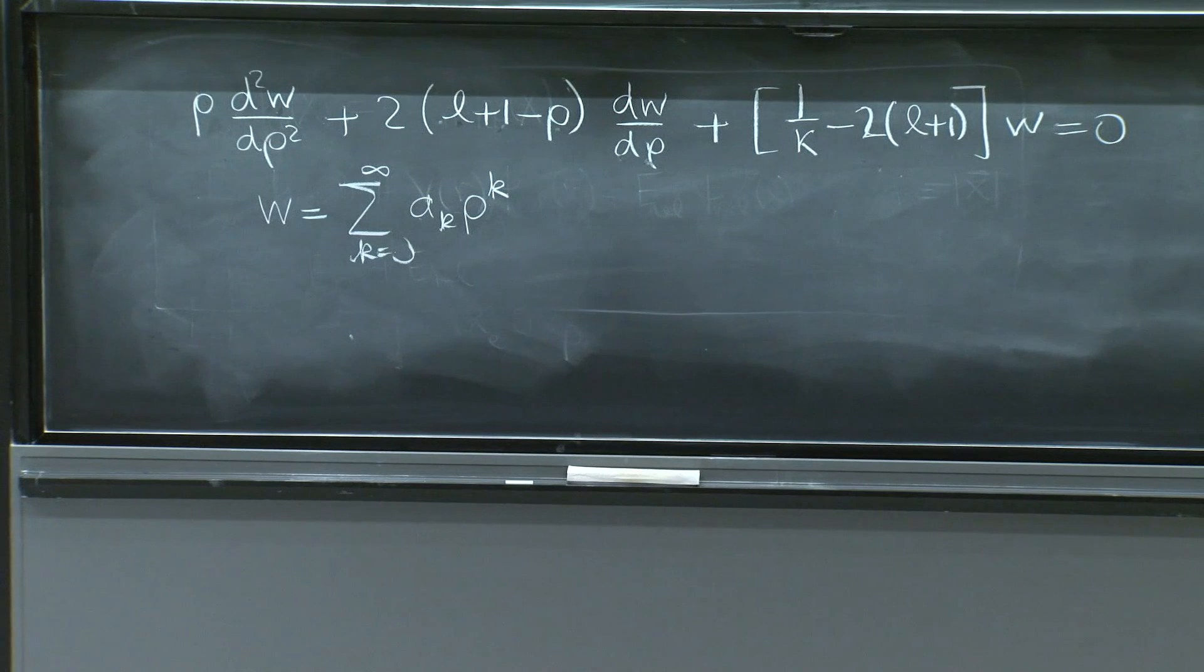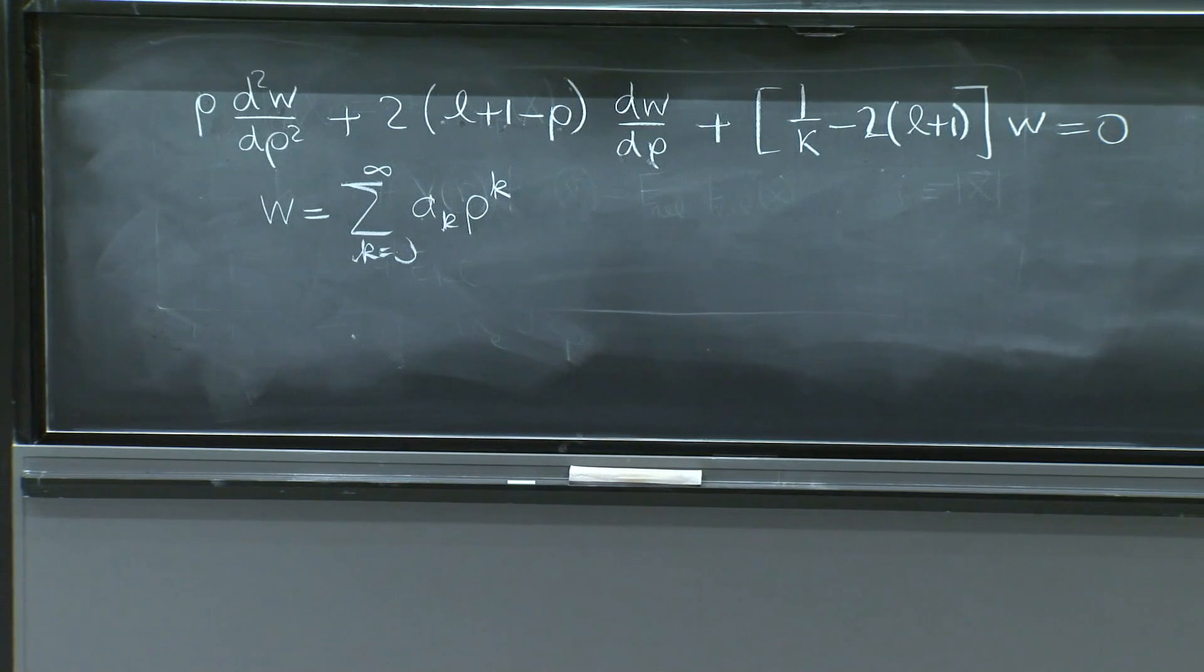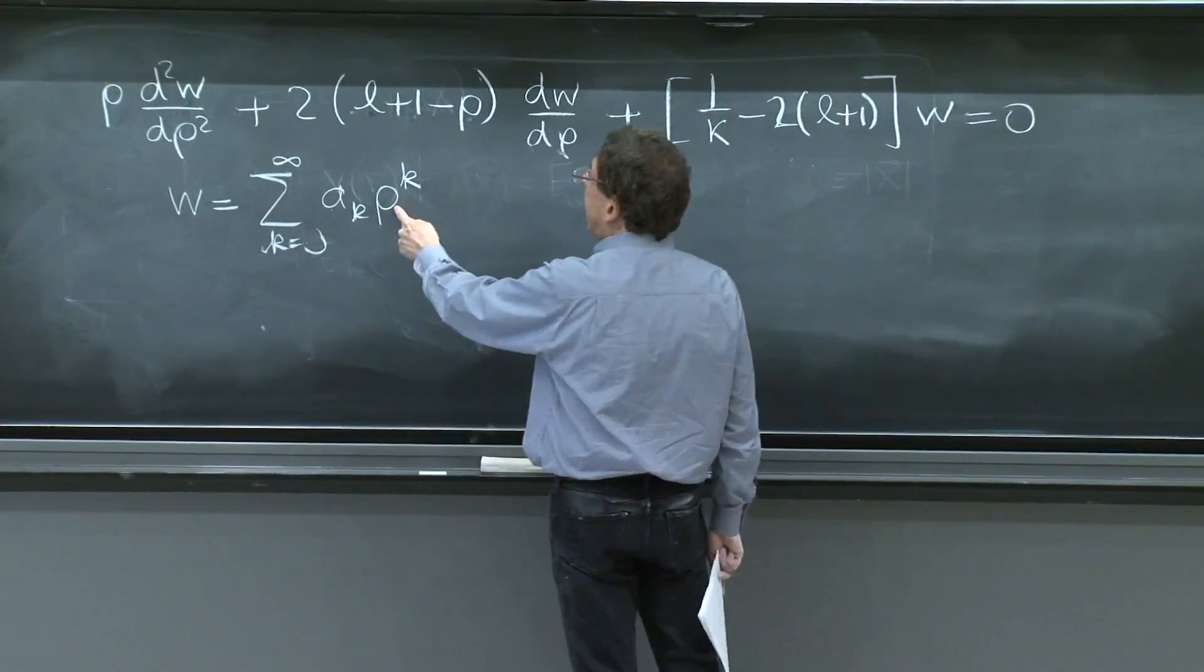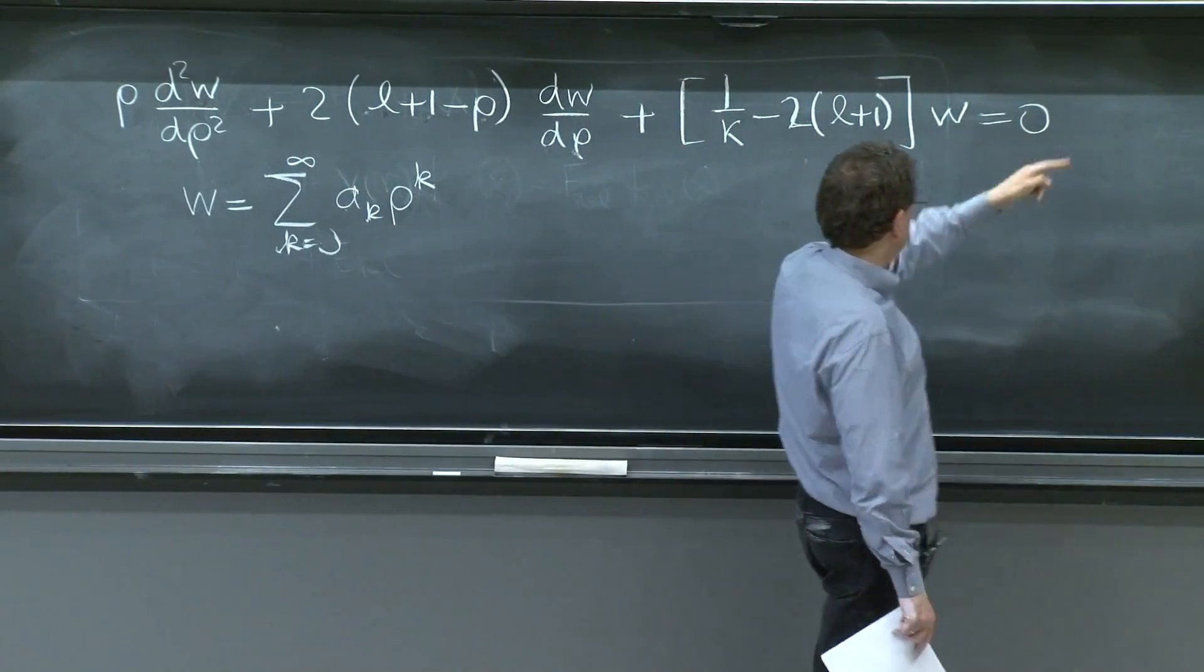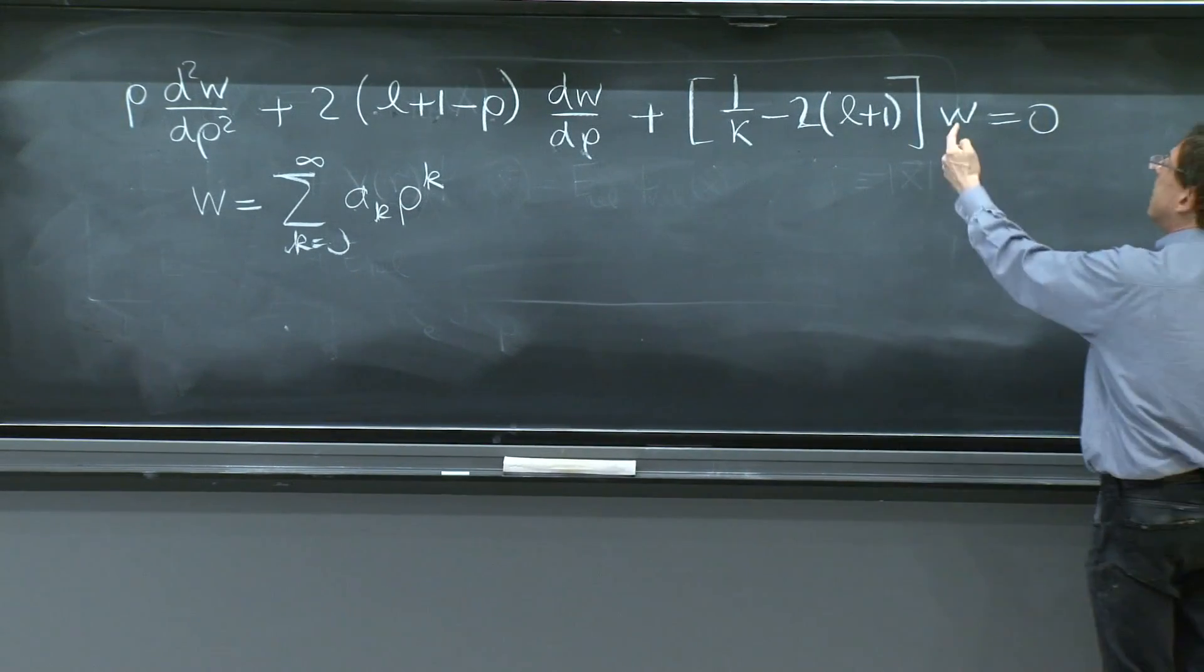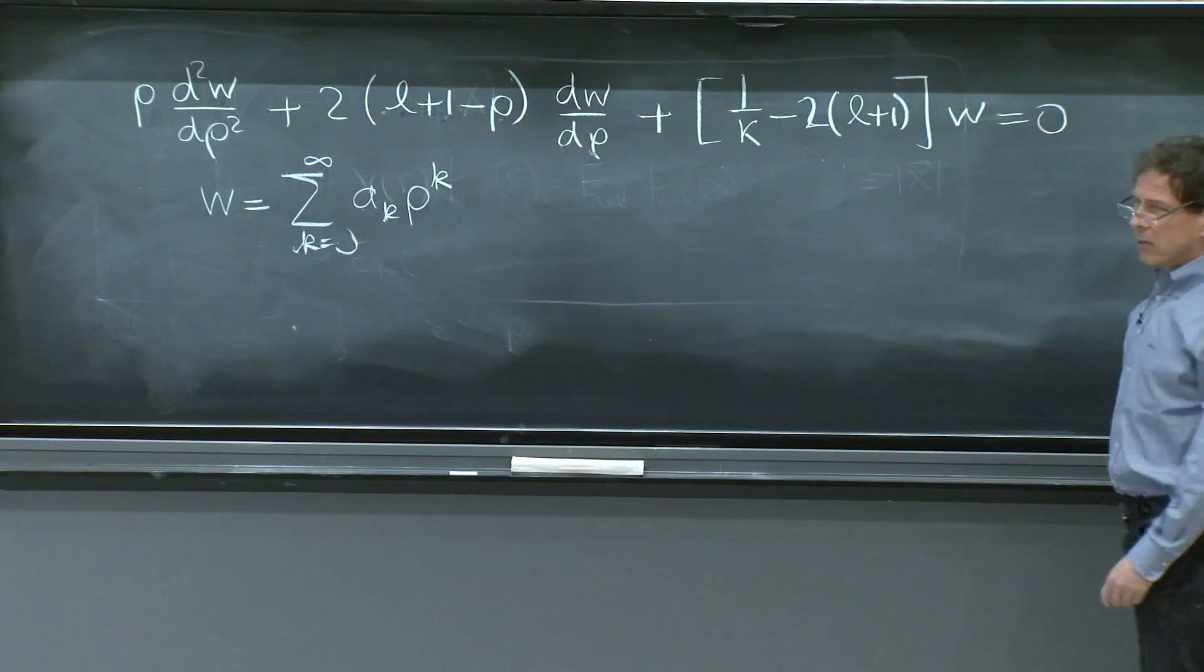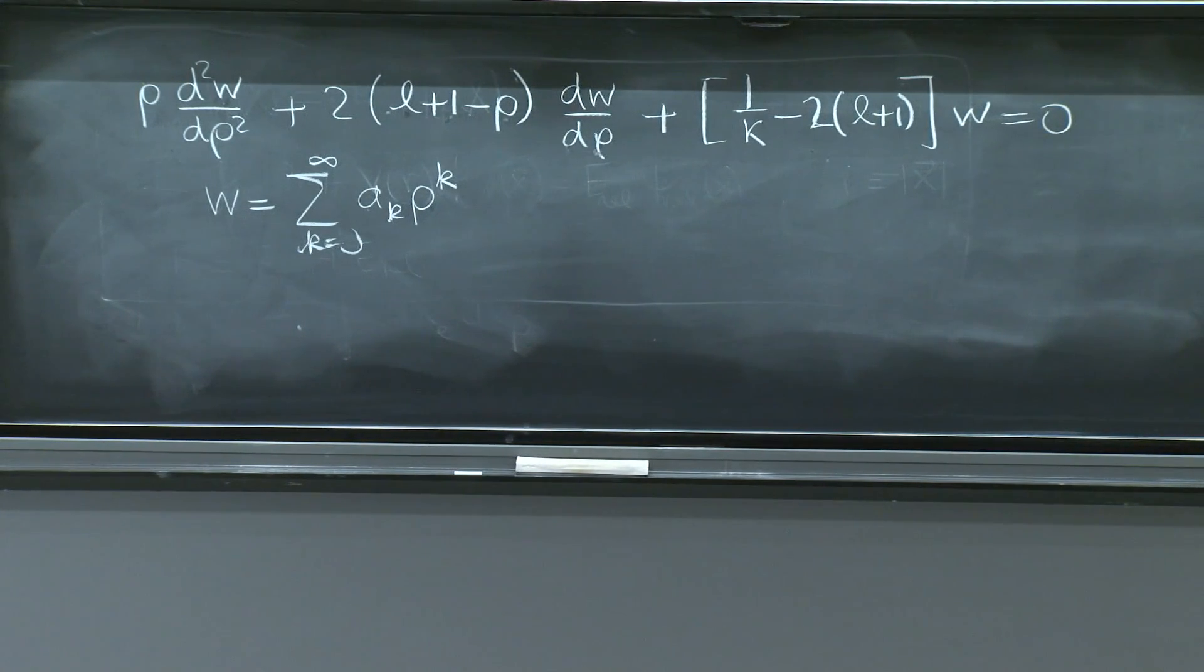I've suggested that usually the thing you should do when you plug in those equations is to look for the power rho to the k in this equation. And since everything is equal to 0, the coefficient of rho to the k should be 0. That's the easiest way to select the powers. That's good practice. You should do it. I won't do it here.